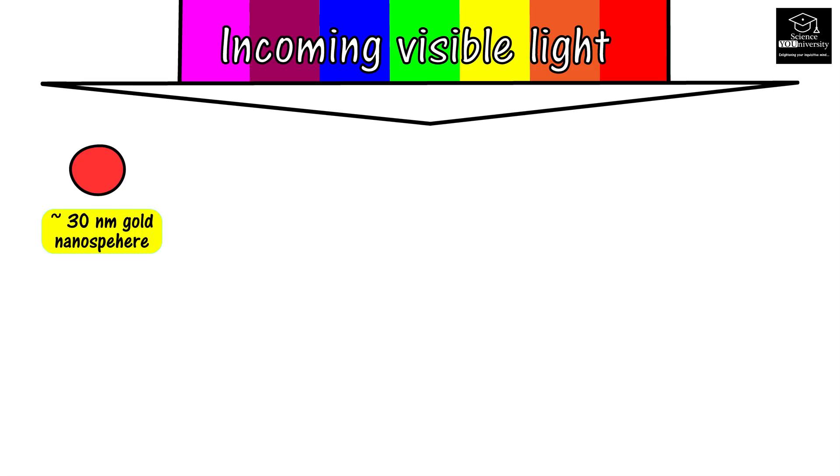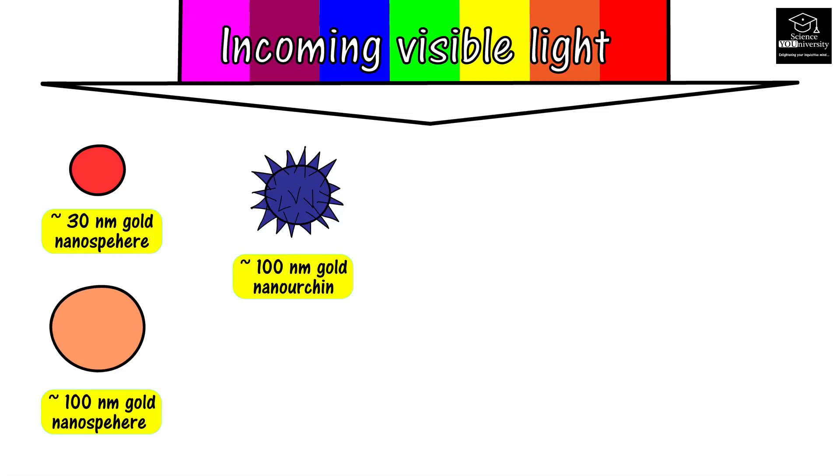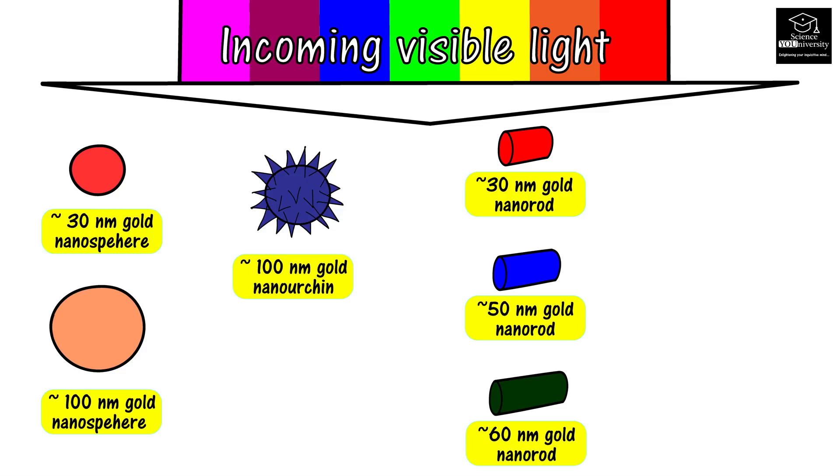However, when light interacts with nanoparticles, the amount of reflected, scattered, absorbed, and transmitted light depends not only on the material, but also on the size, shape, and surrounding medium of the nanoparticles. That's why different gold nanoparticles have different colors.